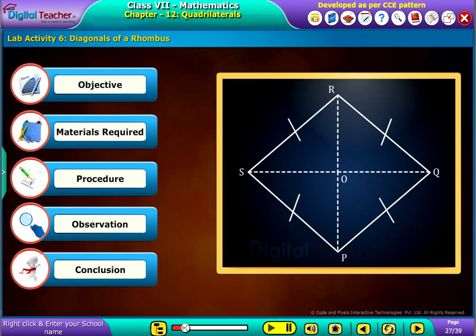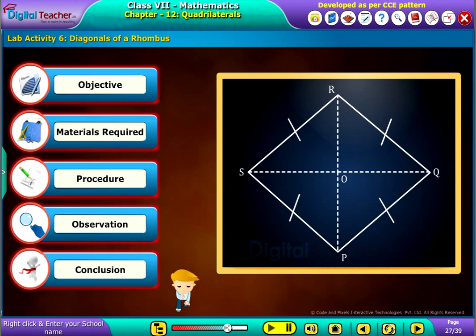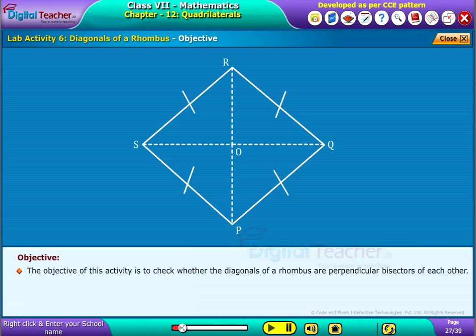This activity helps in understanding the concept of diagonals of a rhombus. Click each tab to know more. The objective of this activity is to check whether the diagonals of a rhombus are perpendicular bisectors of each other.